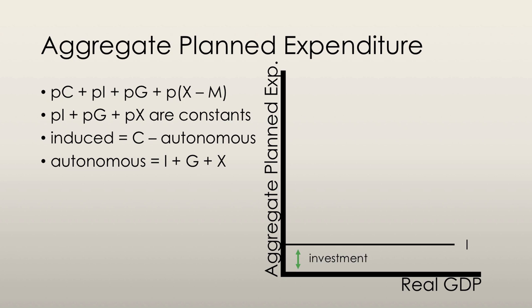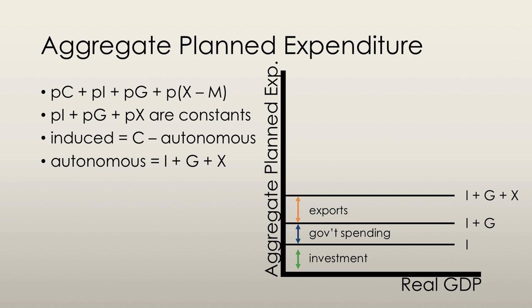First, we're going to take investment, and investment is assumed to be constant, so we have a straight line. Then we're going to add on government spending, which again in this case we're assuming is constant — it's not changing with real GDP. On top of that we're going to add on exports, and again we're assuming that is not changing with real GDP. So we have investment plus government spending plus exports, and that is all assumed to be constant.